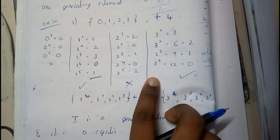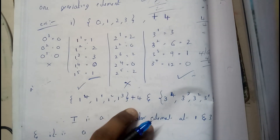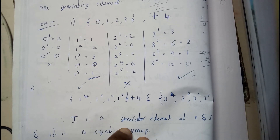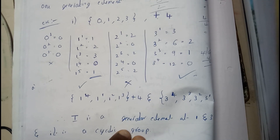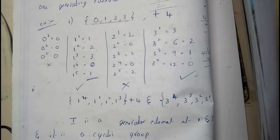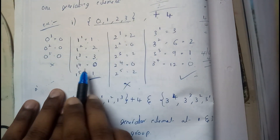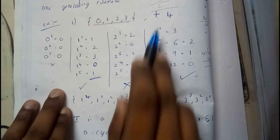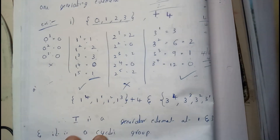For element 3: 3^1 = 3 mod 4 = 3; 3^2 = 3+3 = 6 mod 4 = 2; 3^3 = 3+3+3 = 9 mod 4 = 1; 3^4 = 3+3+3+3 = 12 mod 4 = 0. So powers of 3 give {3, 2, 1, 0} — all elements. Hence both 1 and 3 are generating elements, expressed as 1^1, 1^2, 1^3, 1^4 and 3^1, 3^2, 3^3, 3^4 under +₄.